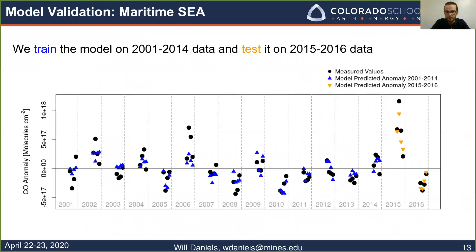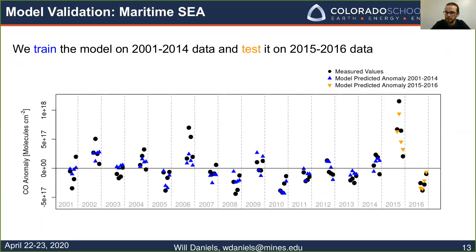Now for model validation. Considering the Maritime Southeast Asia region, we train our model on the 2001 to 2014 data and test it on the 2015 to 2016 data. The black dots are measured values from MOPITT, the blue triangles are training set predictions, and the orange triangles are test set predictions. The model performs pretty well, especially in 2015 — it captures the really large spike in carbon monoxide quite well, which is promising since capturing those large peaks is exactly what we're interested in.